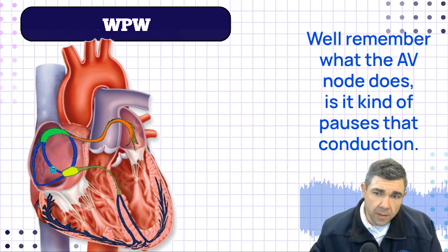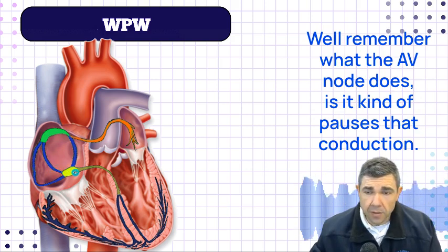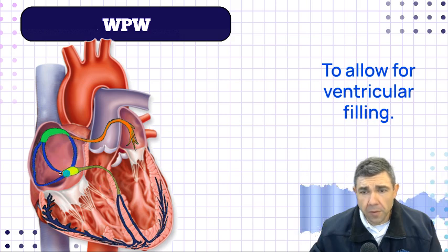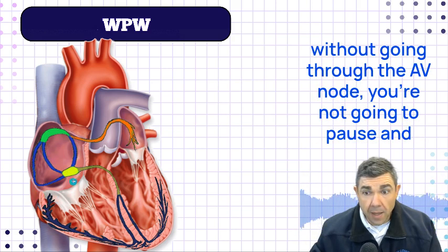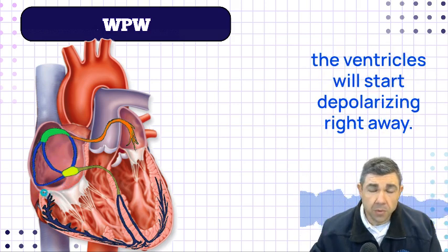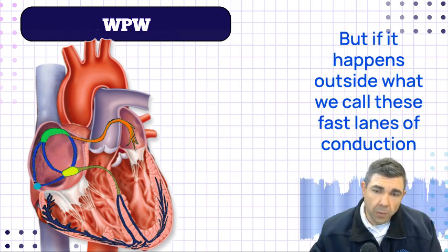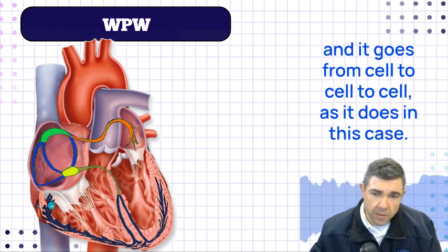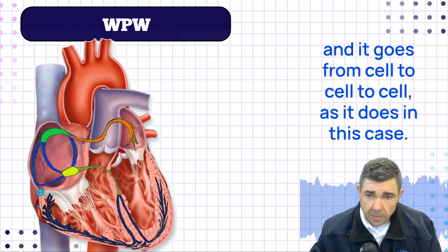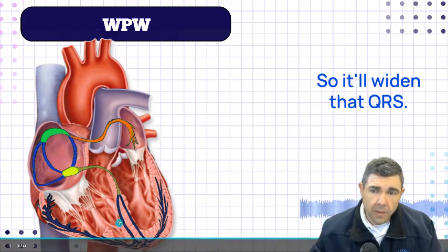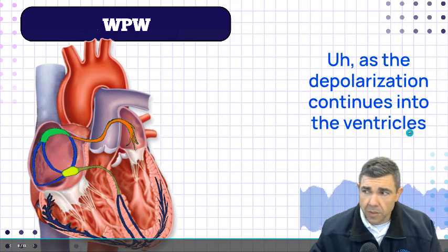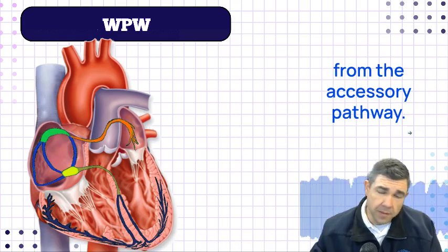Remember what the AV node does — it pauses that conduction to allow for ventricular filling. When you go from the atria to the ventricles without going through the AV node, there's no pause and the ventricles start depolarizing right away. But because it happens outside the fast lanes of conduction and travels cell to cell, it's going to be a little bit slower, which widens the QRS as depolarization continues into the ventricles from the accessory pathway.